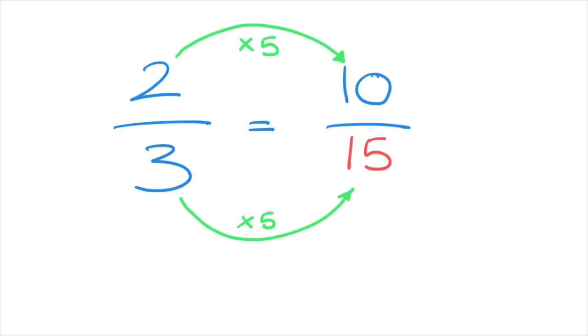Let's look at another example. Let's say we have to write the fraction 6 eighths, or 6 over 8, as an equivalent fraction for which the numerator is equal to 18. In other words, we need to find the denominator, which I'm calling x here.